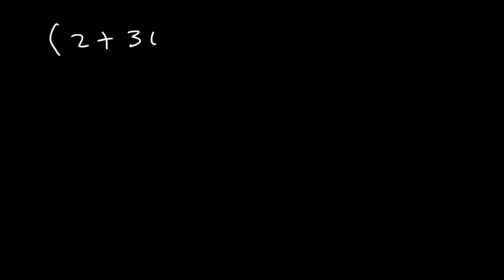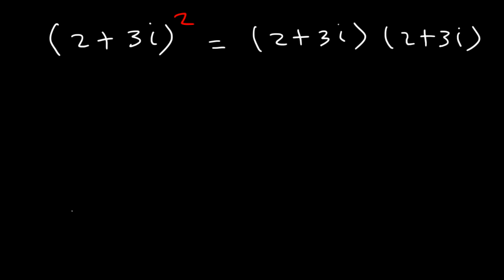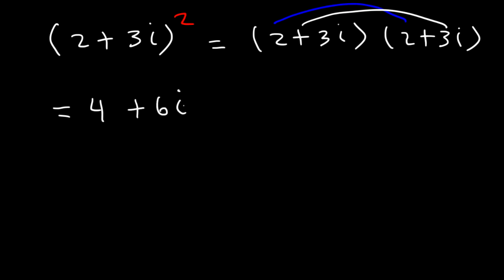Go ahead and expand (2 plus 3i) squared. We rewrite it as (2 plus 3i) times (2 plus 3i) and FOIL. 2 times 2 is 4. 2 times 3i is positive 6i. 3i times 2 is positive 6i as well. And 3i times 3i is 9i squared.